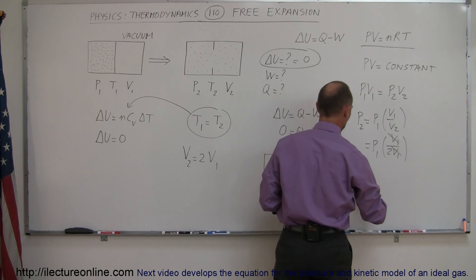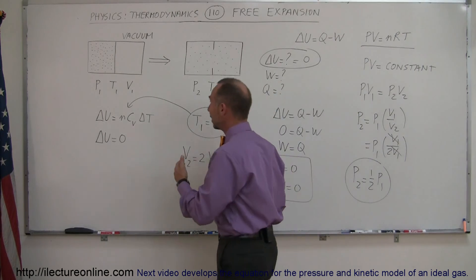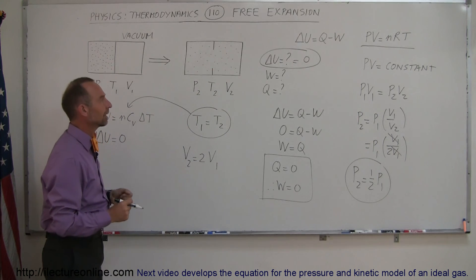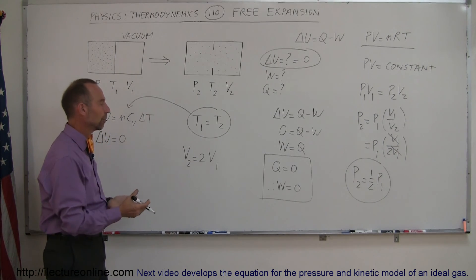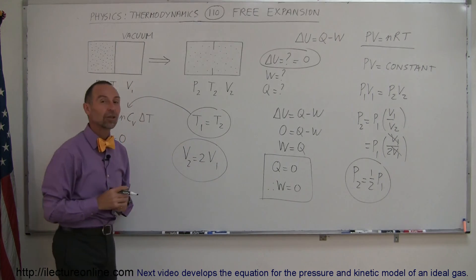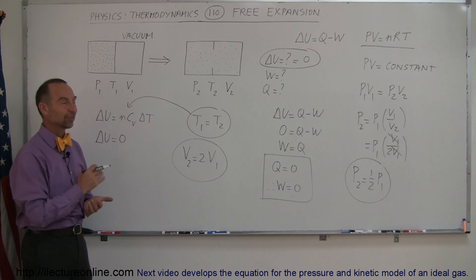So that means that pressure 2, therefore, is 1 half pressure 1. So what does change is that now the gas takes up twice the volume, and therefore the pressure inside the gas has dropped to one half of what it was before. But other than that, there's no changes in the thermodynamic state of the gas in a free expansion. And that's how you do that.